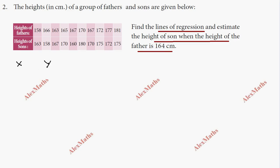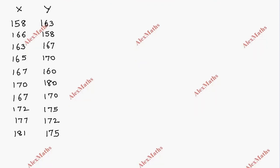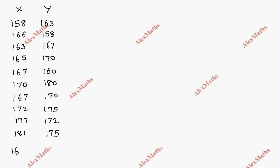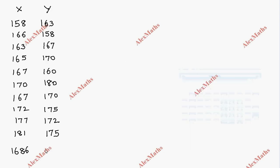The X values are listed one below the other. The total sum is 1686. The Y values total is 1690.